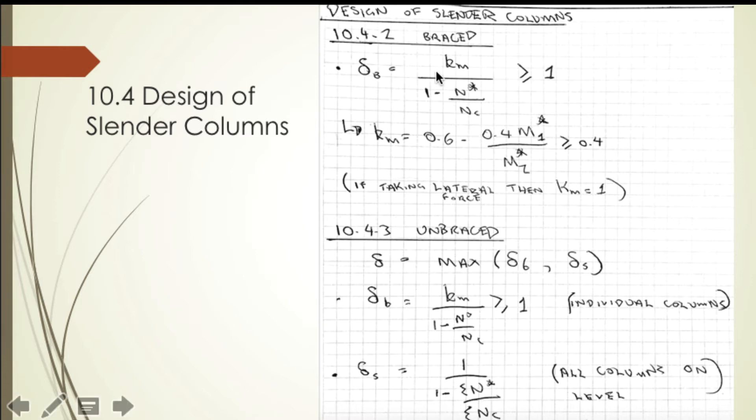Section 10.4.2 addresses braced columns. Here we have the moment modification factor with a value k_m divided by (1 minus N*/N_c), with k_m a function of the moment at the top and bottom of the column.